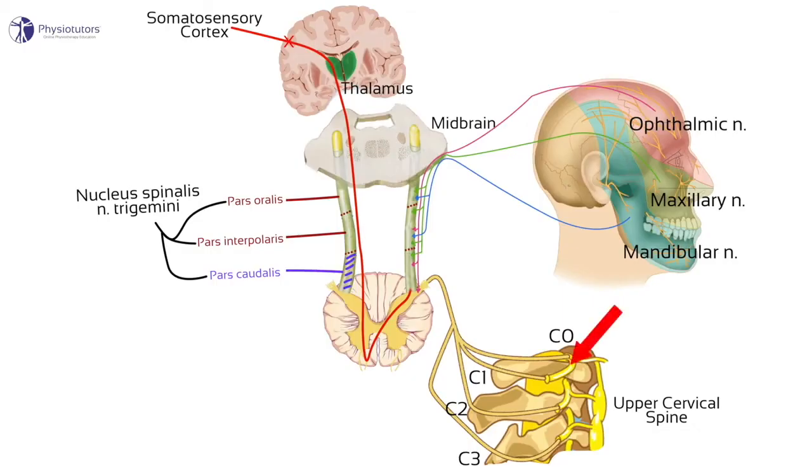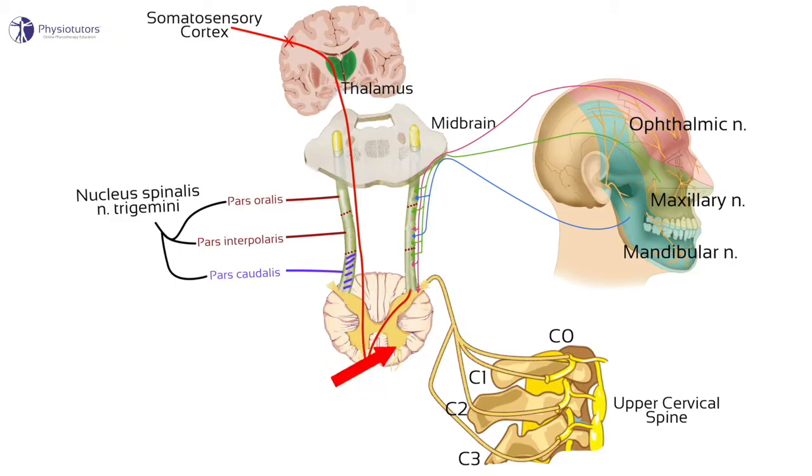The other thing to consider is where the nerves that connect these tissues — your neck and your head — connect into your spinal cord to report what's going on to your brain. In this case, they connect at the exact same levels. That's the idea behind convergence-projection theory, which explains this kind of referred pain. We have two nerve pathways entering your spinal cord and synapsing at the second-order neuron — the middleman between them and the brain — and your brain interprets that the one more likely to be in pain is causing the issue.